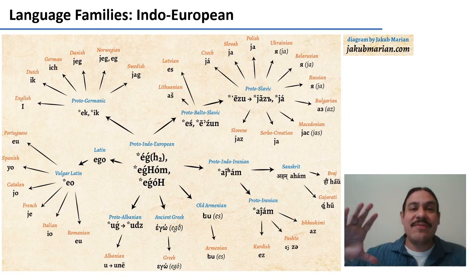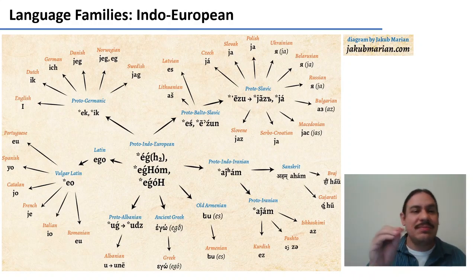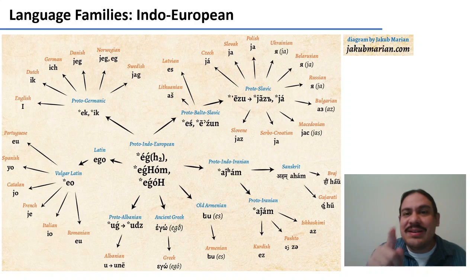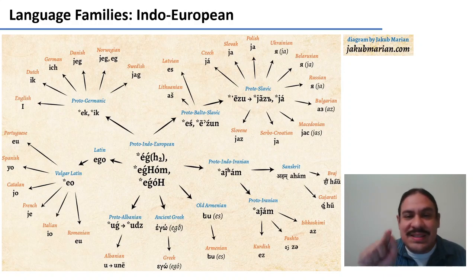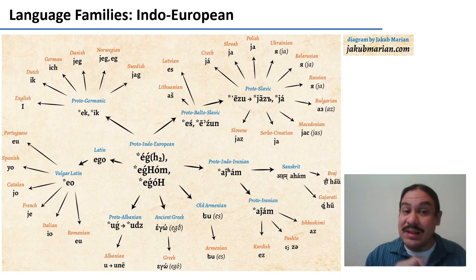So we have the Indo-European family, with some previous proto-form that changed into the languages we see today. There are many other languages in Indo-European: Russian, Ukrainian, and Polish are in one part of the family; Greek, Armenian, Farsi, and Albanian are there as well.